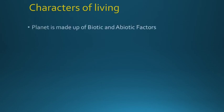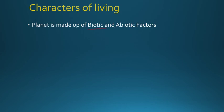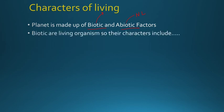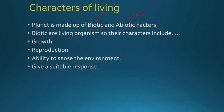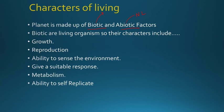So what are the characteristics of living organisms? This planet is made up of biotic and abiotic factors. Biotic factors include living factors such as plants, animals, and microorganisms. Abiotic factors include non-living factors such as soil, water, temperature, humidity, pressure, and light. The characters of living organisms include growth, reproduction, ability to sense the environment and give a suitable response to stimuli, metabolism, ability to self-replicate and self-organize, and control and coordinate all systems in the body.